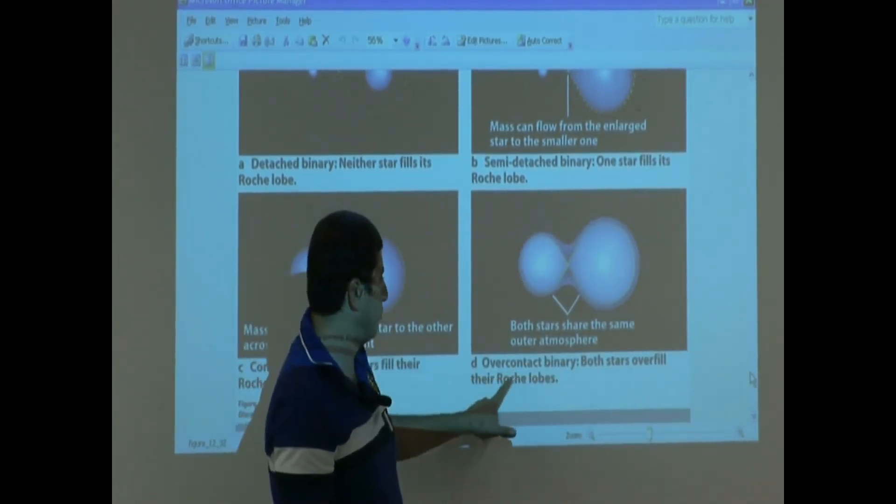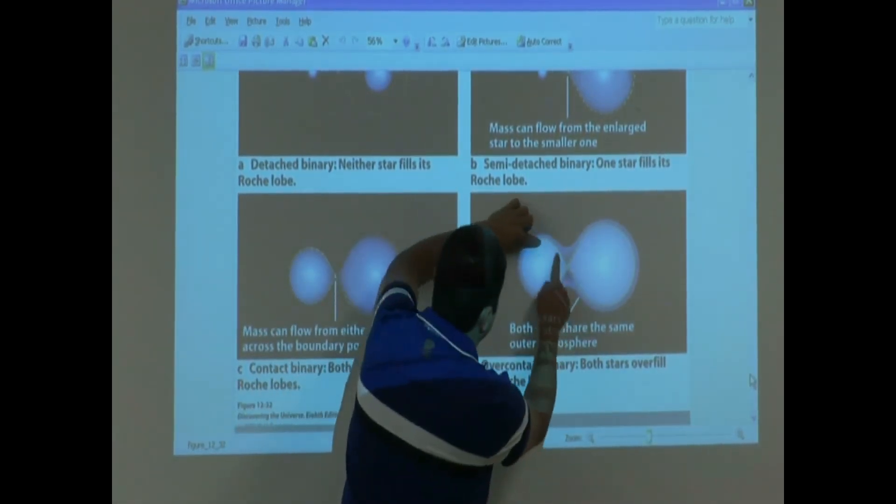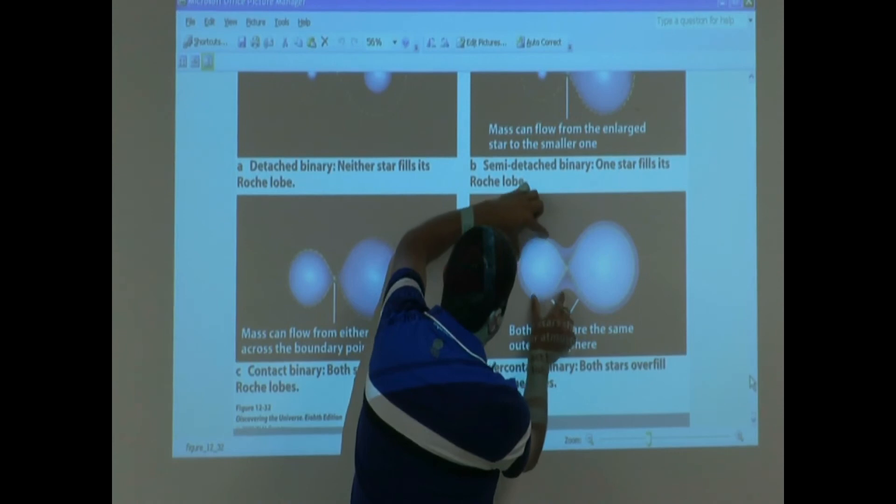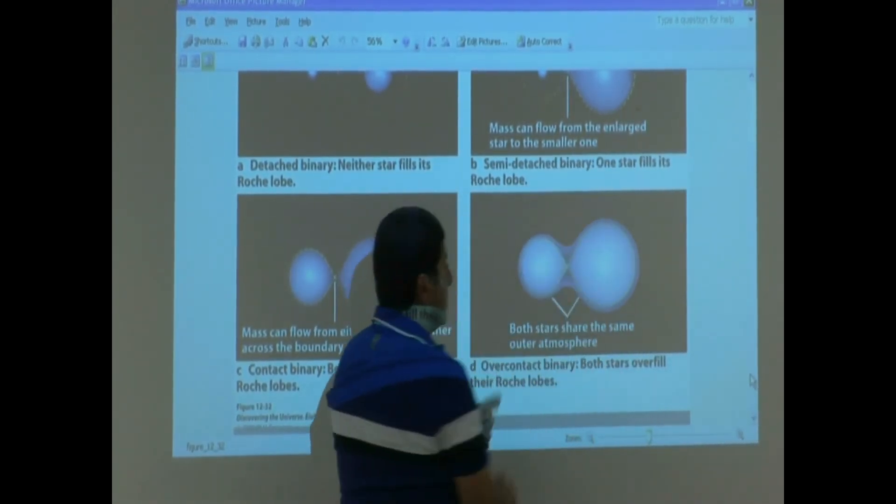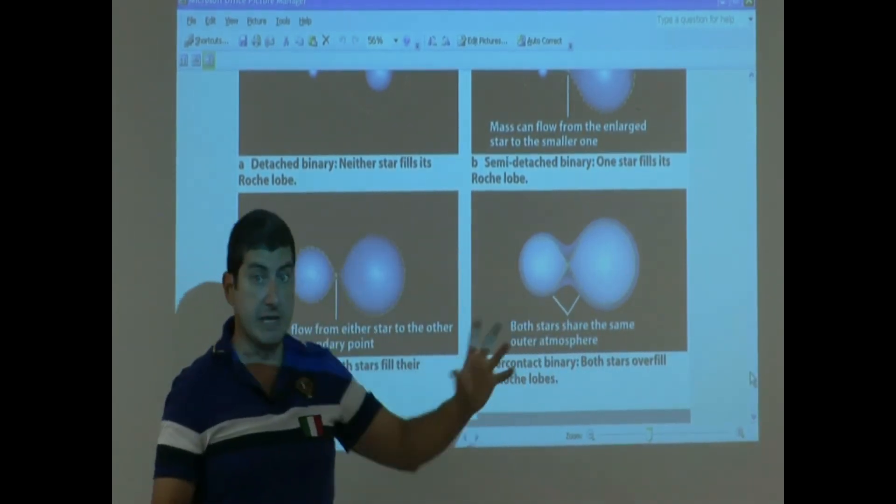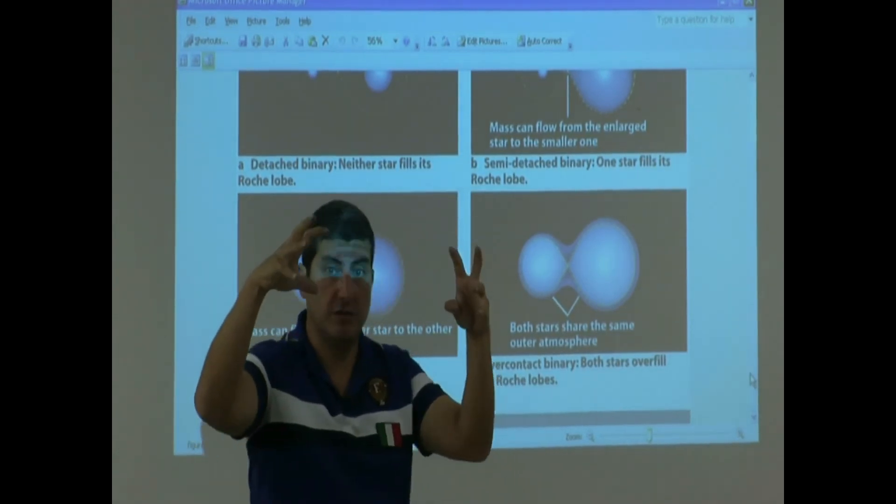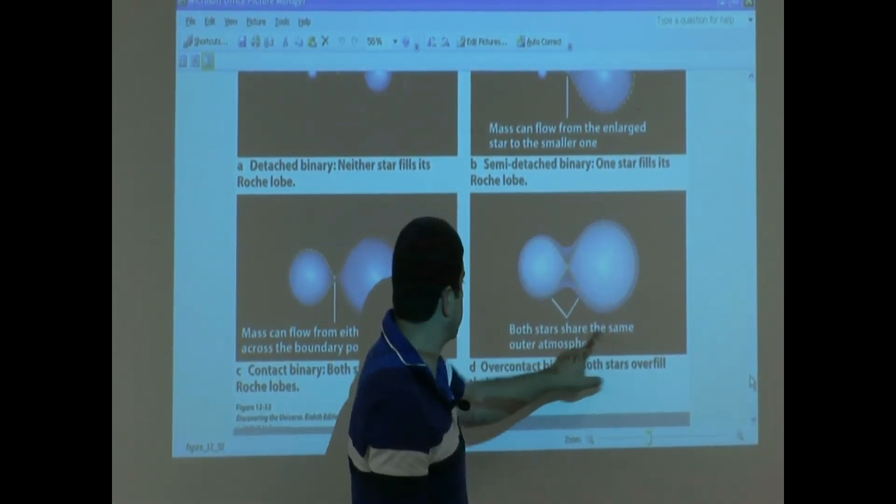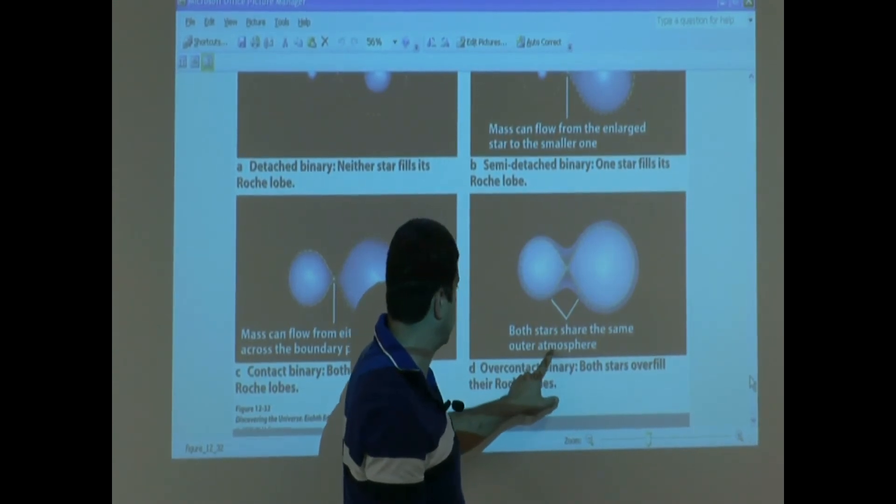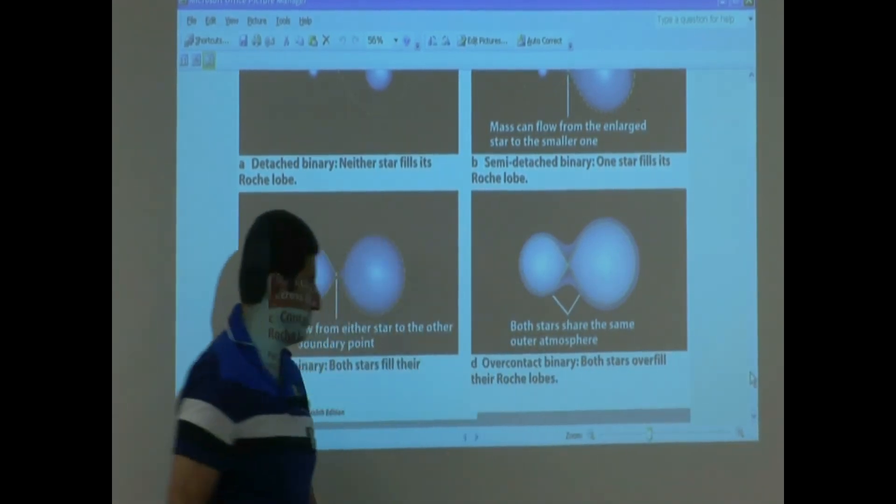Both stars overfill their Roche lobes. You see here this one? Roche lobe here. This one fills up and spills over. This one fills up, spills over. And then these are hard to detect because to us, it looks like it's just one binary. It just looks like it's one star. So both stars share the same outer atmosphere. You see there? The outer atmosphere? They share. They share the same outer atmosphere.